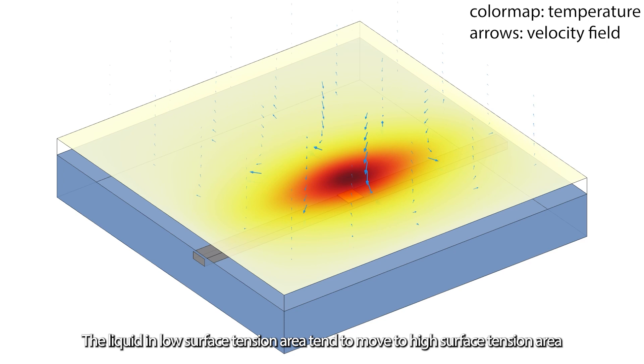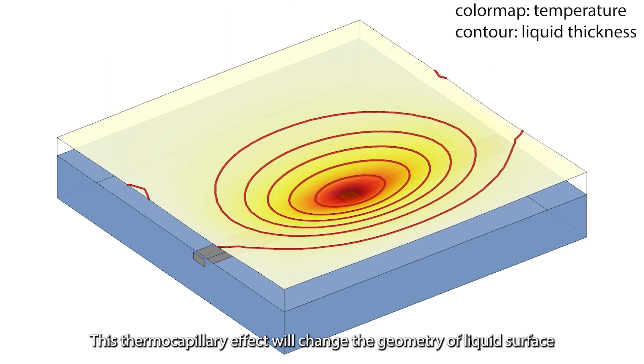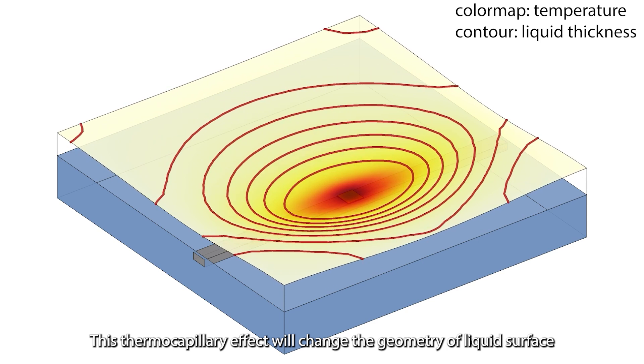The liquid in low surface tension area tends to move to high surface tension area. This thermocapillary effect will change the geometry of the liquid surface.